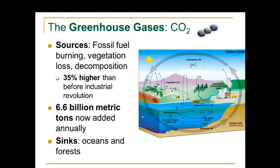So what are the greenhouse gases? Carbon dioxide is a big one. The big source of it is burning fossil fuel, but also vegetation loss — because we can trap CO2 in vegetation. Right now the CO2 level is 35% higher than it was before the Industrial Revolution. We're adding 6.6 billion metric tons annually. Oceans and forests are still capable of storing CO2 for us as sinks.